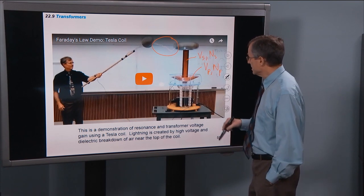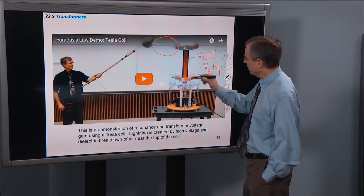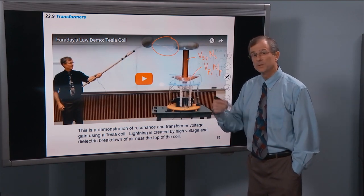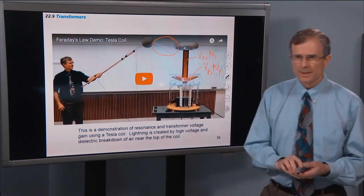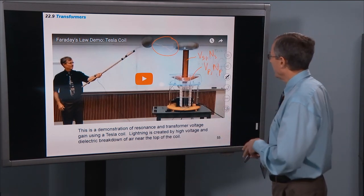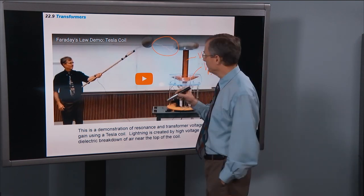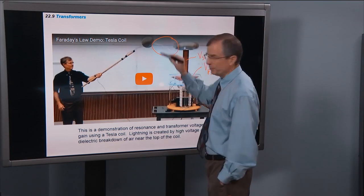And what that does is that, in going from the primary to the secondary, you get a huge increase in both the number of turns and in the voltage. And with a high voltage of about, something like, on the order of 3 million volts per meter, you can get dielectric breakdown of the air.